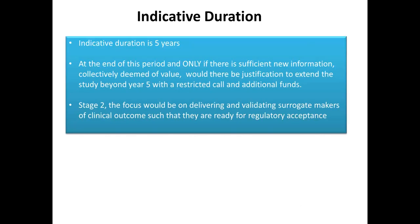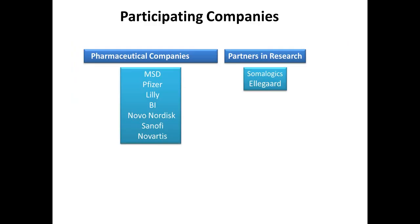The indicative duration of this project is five years. At the end of this period, and only if there is sufficient new information collectively deemed of value, we expect justification to extend the study beyond year five. A restricted Stage 2 call would focus on delivering and validating the surrogate markers such that they're ready for regulatory acceptance. Previous experience has taught us that five years is simply not realistic to reach the regulatory acceptance stage.